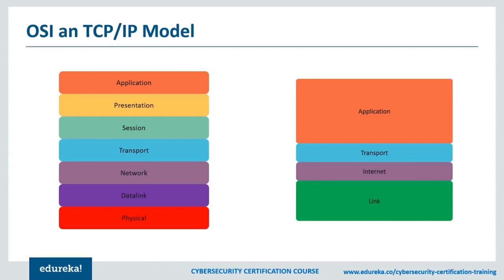Above the transport layer is the session layer at layer 5 — that includes AppleTalk, SSH, and several other protocols. Then there's the presentation layer at layer 6, where you'll see things like JPEG and MPEG as examples of protocols that live there. Finally, we have layer 7, the application layer — that's HTTP, FTP, SMTP, and similar application protocols whose responsibility is to deliver and use functionality.